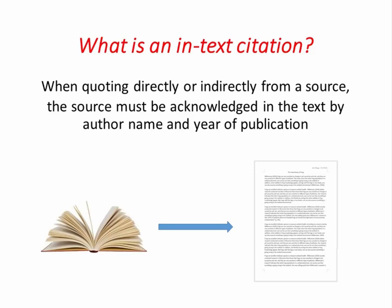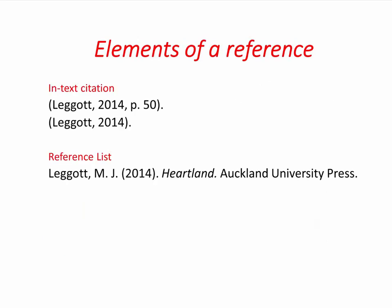In-text citations are the part of referencing that appears in the body of your assignment. Every time you use another person's idea or work, you need to acknowledge it by inserting the author's name, the year of publication, and if it is a direct quote, its location. The in-text citation should match the full bibliographic information of the work in your reference list.